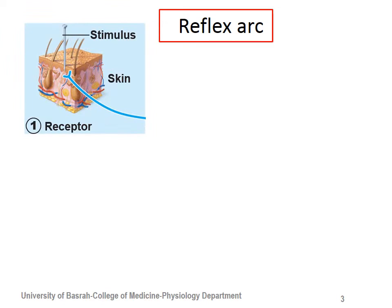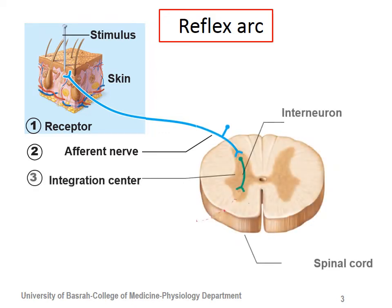The reflex arc is started by stimulation — sensory stimulation, as we discussed in the sensory nervous system. When there is stimulation, there should be receptors, starting in the peripheral aspects within the muscle. The receptors send stimulation by propagation of action potential through the sensory nerve endings. These are the afferent signals. The difference is that they will not ascend to higher centers or the cortex; the integration and processing of this information takes place within the spinal cord.